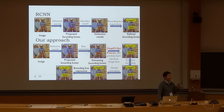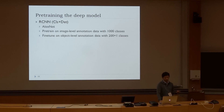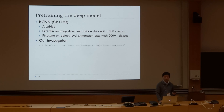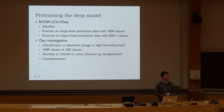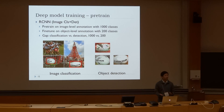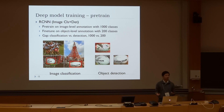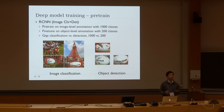The first part is about how to pre-train the model. We investigate the image classification and object detection task mismatch, the number of classes, and the deep models used. RCNN pre-trains on image classification data, which is image-level annotation, and then fine-tunes on object detection data, which is object-level annotation. However, there is a mismatch between these two datasets.